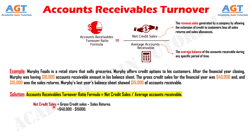So, putting the values we get: net credit sales equals $40,000 minus $15,000, which gives $25,000 as the net credit sales.